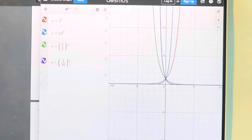And we have the two functions that are fractional, so 1 third to the x and 1 tenth to the x, starting in the negative infinity all the way down to 0, versus the greater than 1 bases start at 0 and go up to positive infinity.